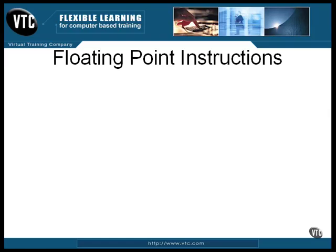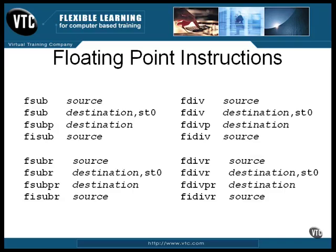Twice as many instructions exist for subtraction and division as for addition and multiplication, because the order of the numbers makes a difference. The extra instructions perform the same operations but in the opposite order. That's what the opcodes with the R at the end are for — performing the same operation in reverse order. The source and destinations are the same as described earlier for addition and multiplication.